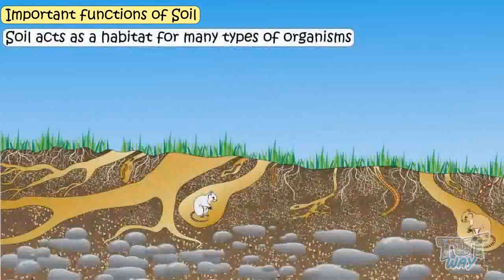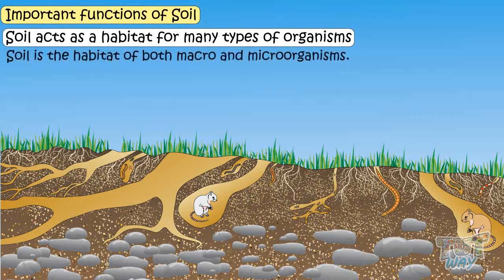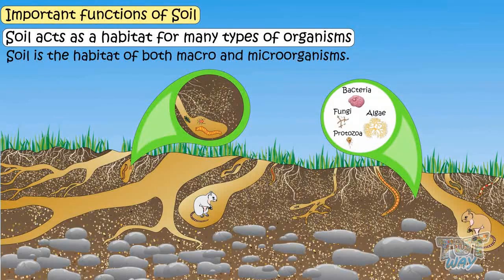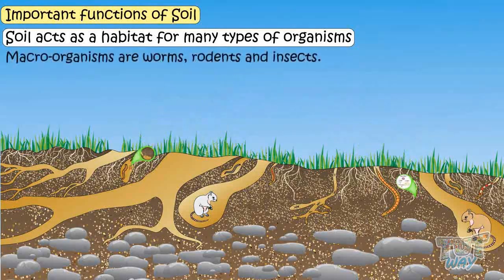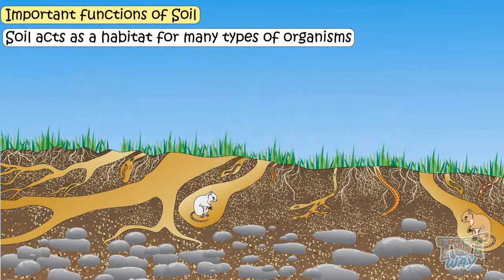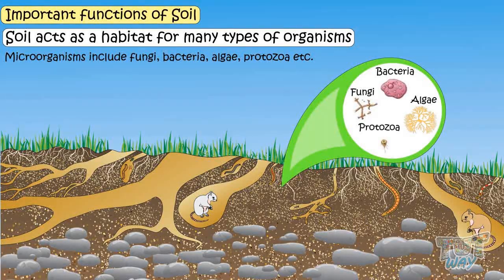Soil acts as a habitat for many types of organisms. Soil is the habitat of both macro and micro-organisms. Macro-organisms are worms, rodents, and insects. Micro-organisms are fungi, bacteria, algae, and protozoa, etc.